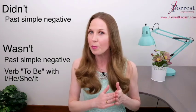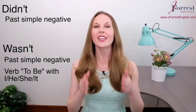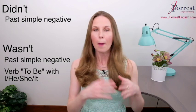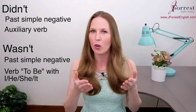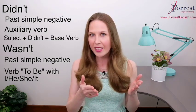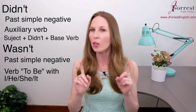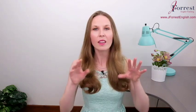'Wasn't' is the past simple negative form of the verb 'to be', but 'wasn't' is only used with the subjects I, he, she, and it. 'Didn't' is a past simple negative form, but it's an auxiliary verb, which means it doesn't have a base verb itself. It's used with any base verb, so our sentence structure would be: subject + didn't + base verb to form a complete past simple negative sentence.